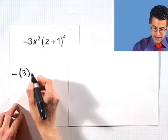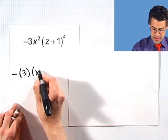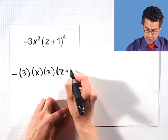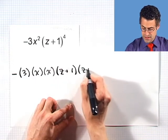Then we've got the 3 and then we've got x squared. So that's two copies of x multiplied together. And then we've got z plus 1, not once.